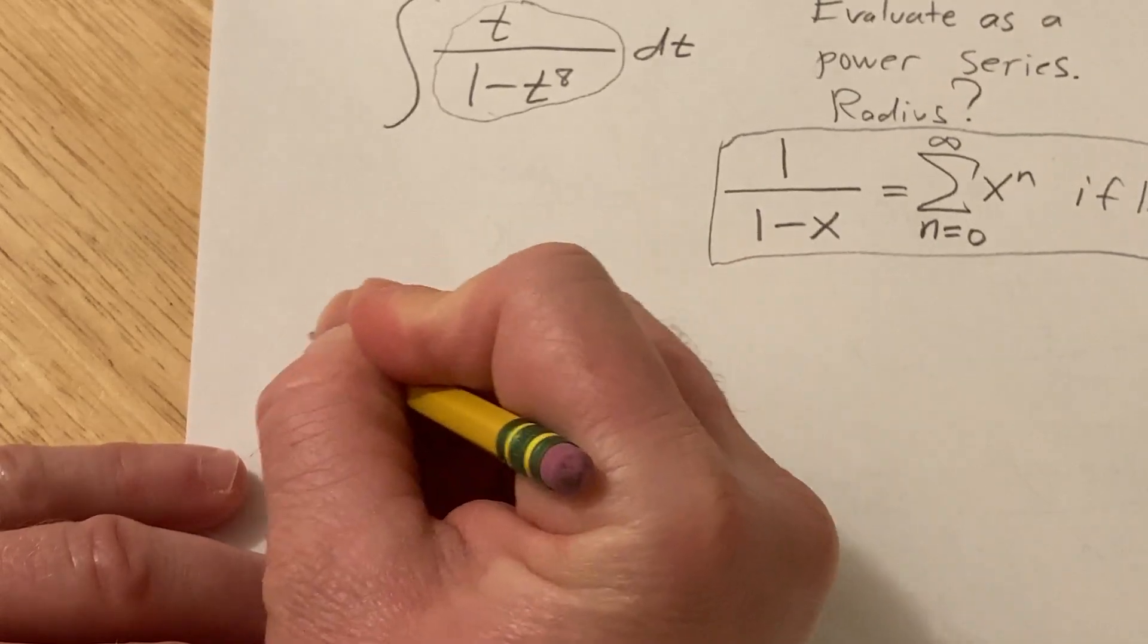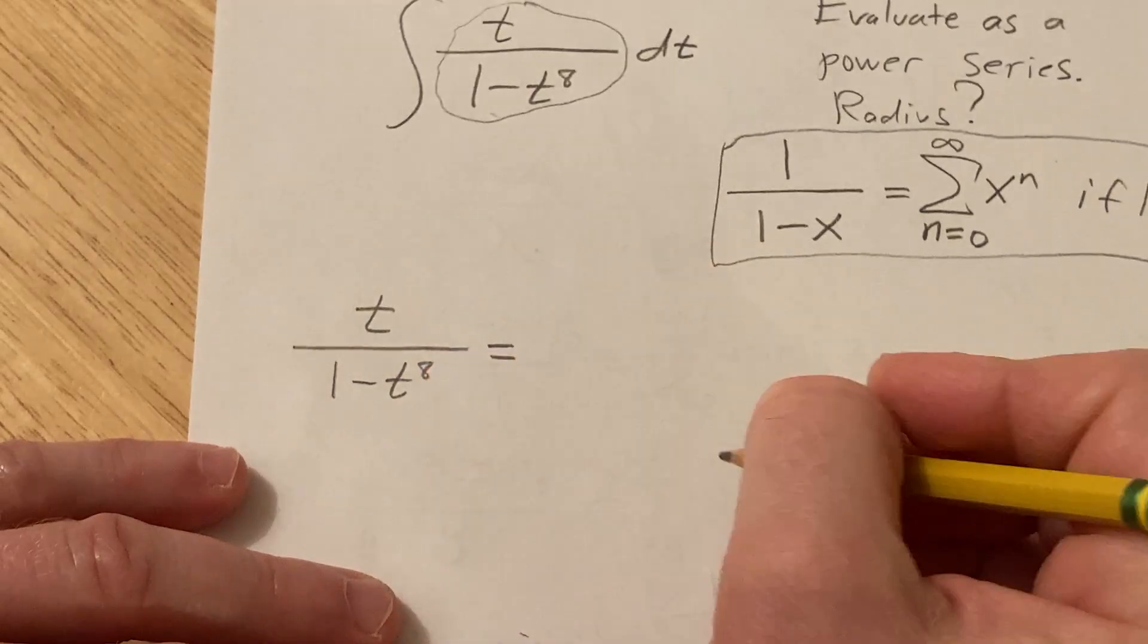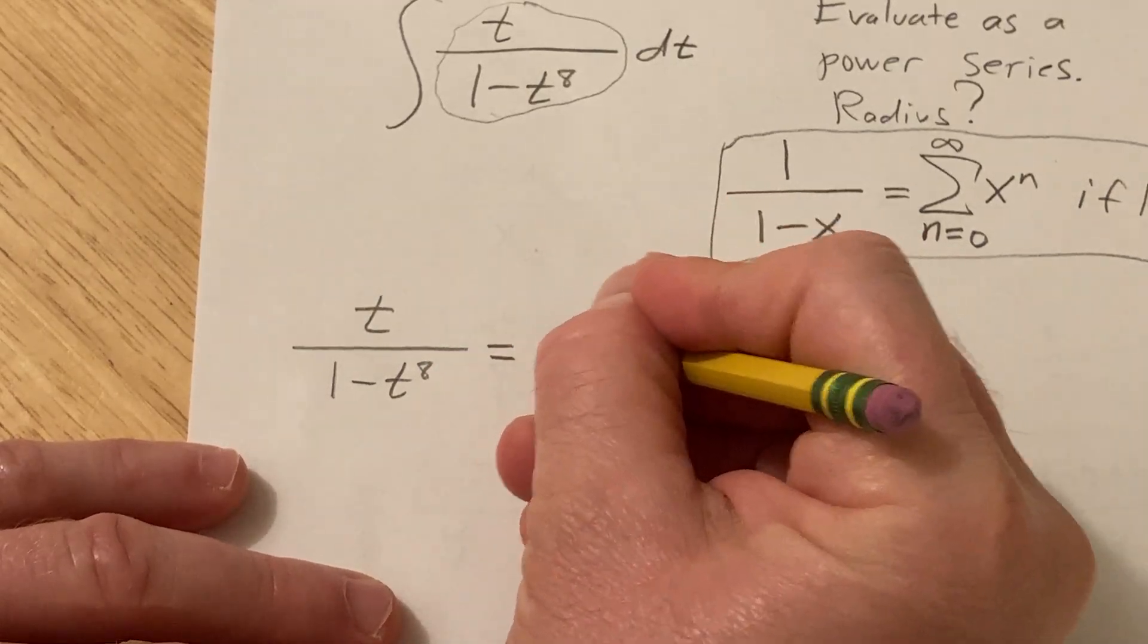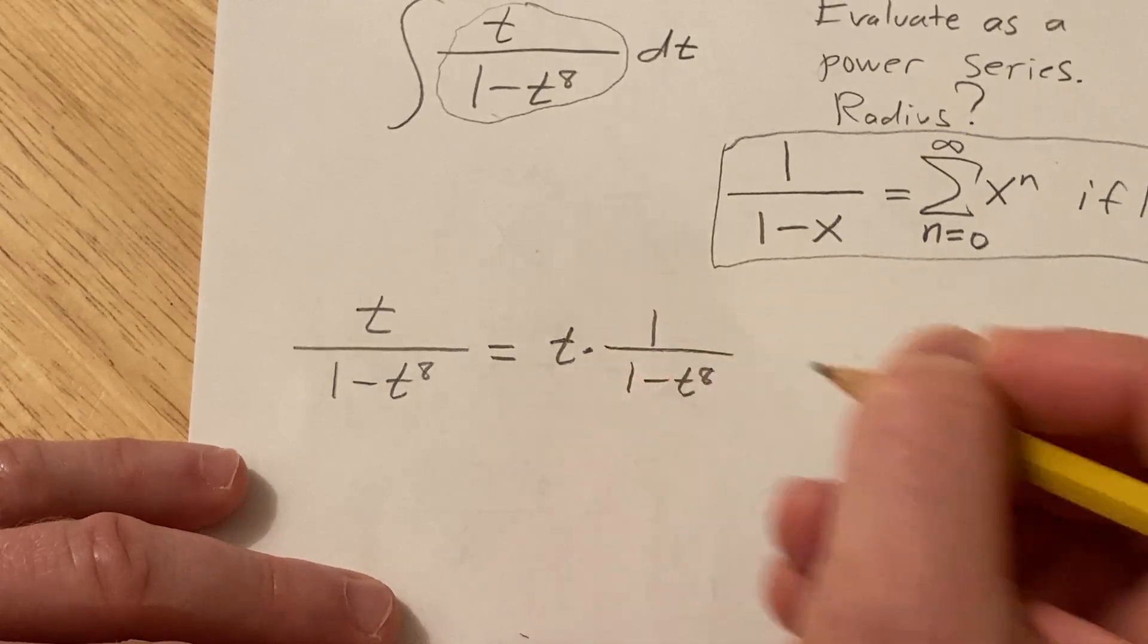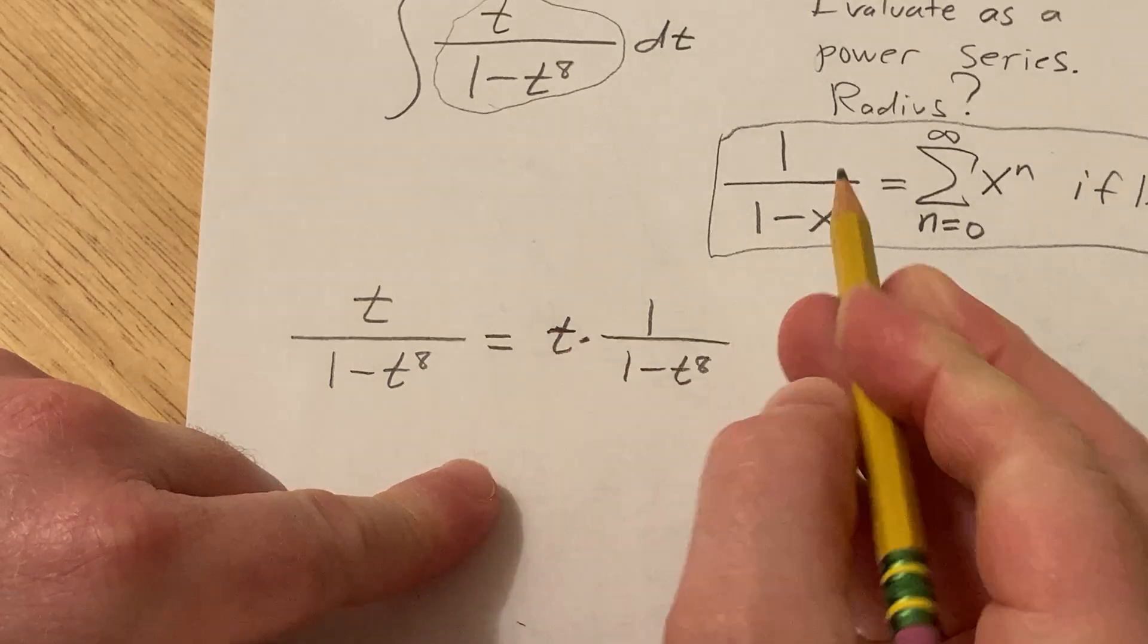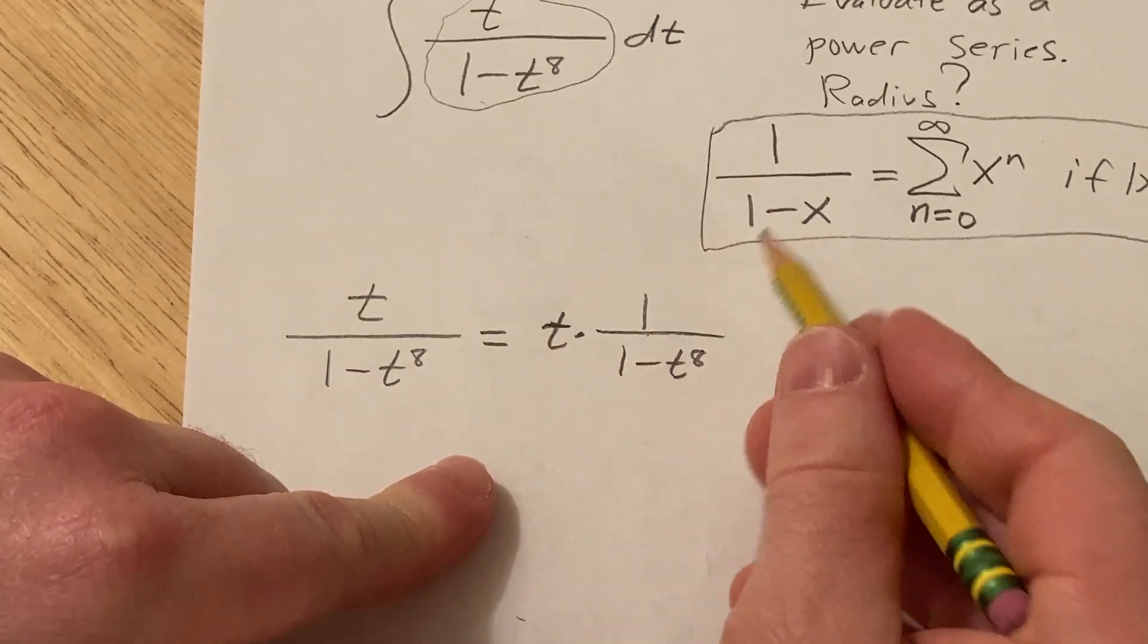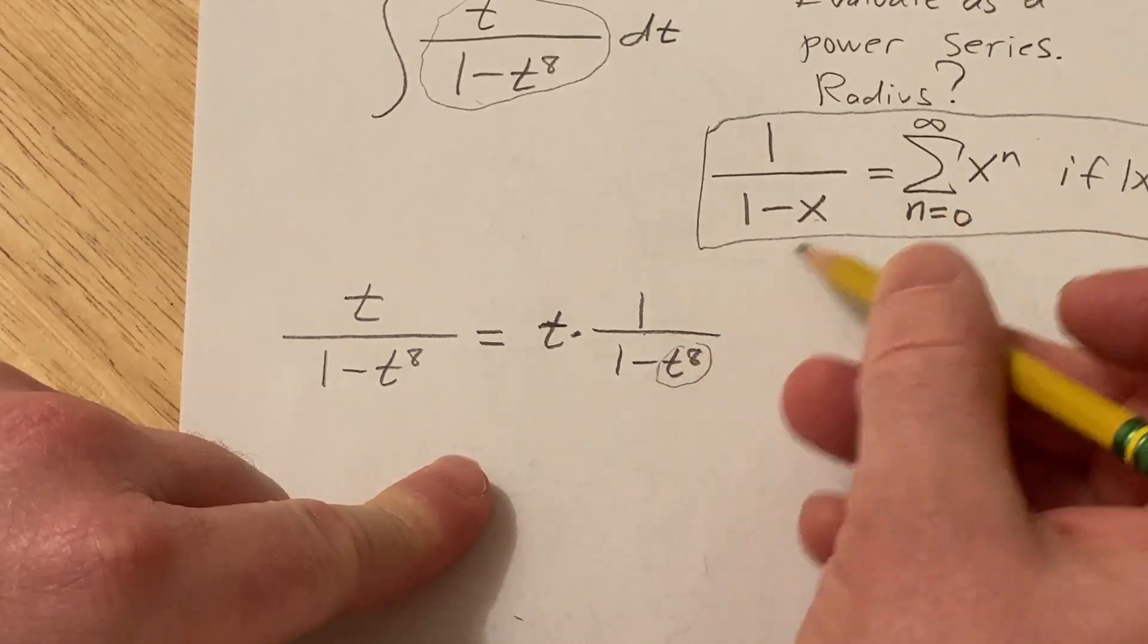We have t over one minus t to the eighth. That's going to be t times one over one minus t to the eighth. I wrote it like that, I put the t out front because I want to emphasize that there is a one in the numerator. So using pattern matching, this t to the eighth is going to be our x.